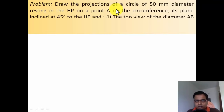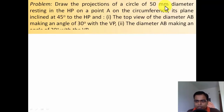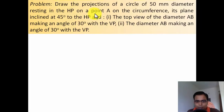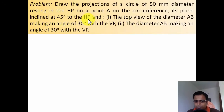Draw the projections of a circle of 50 mm diameter resting in the HP on a point A on the circumference. Its plane is inclined at 45 degrees to the HP. So the surface inclination has been given as 45 degrees with the horizontal plane.